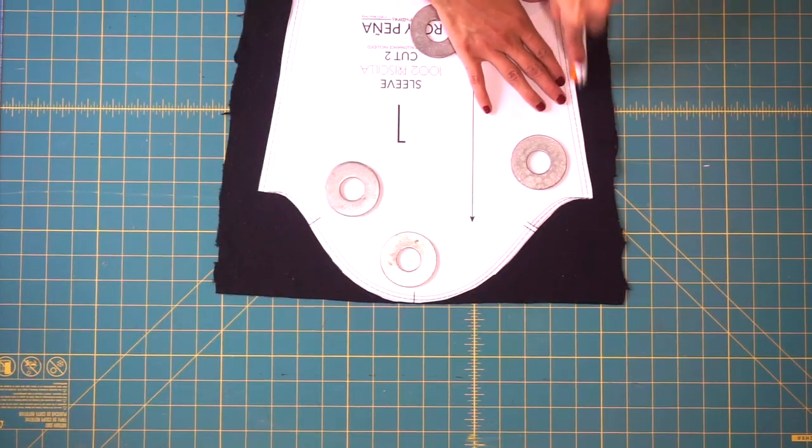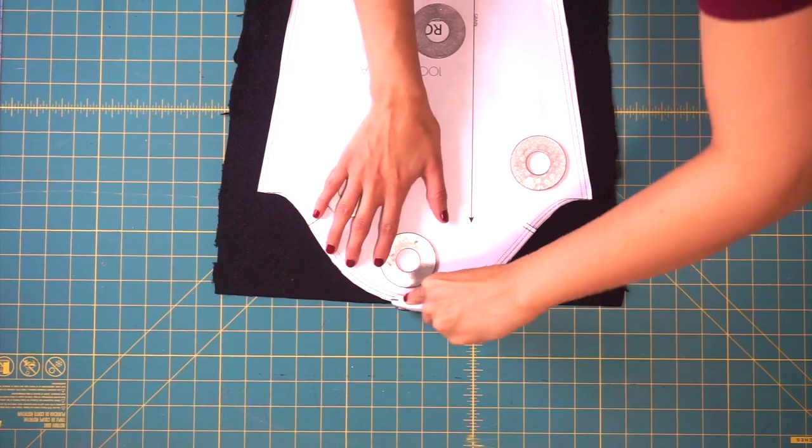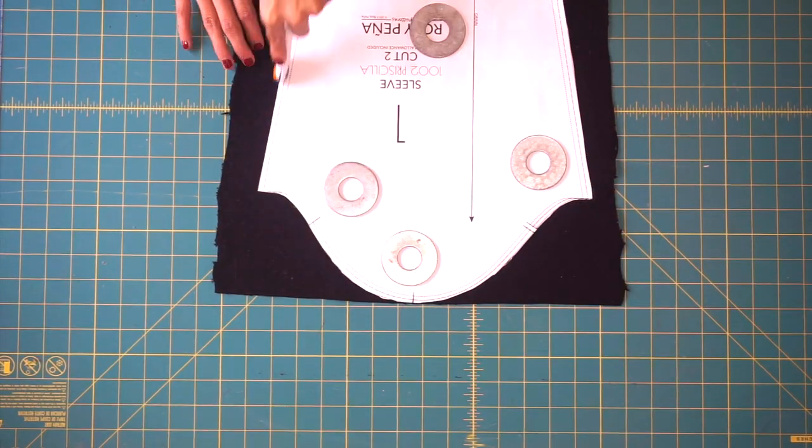Next cut out your sleeve pattern as normal and then also cut out your sleeve hack pattern as normal as well.